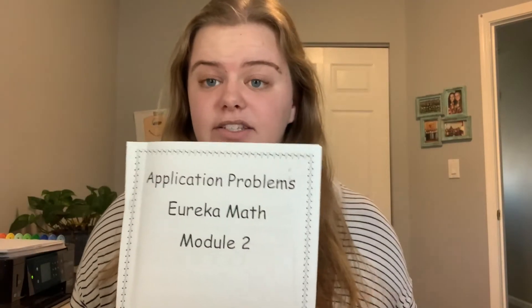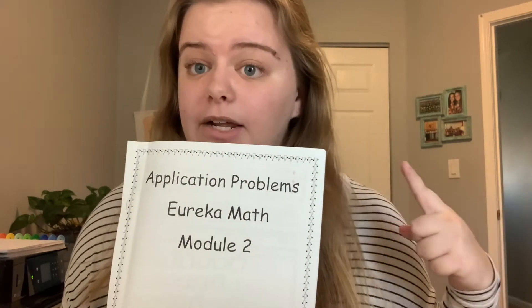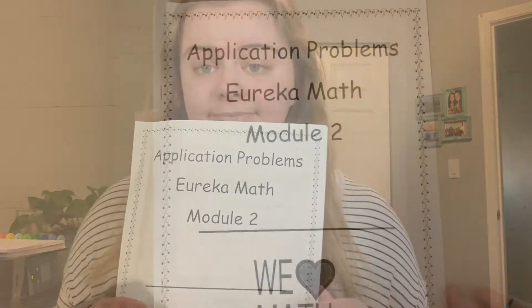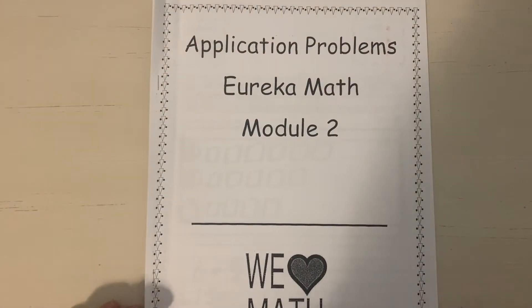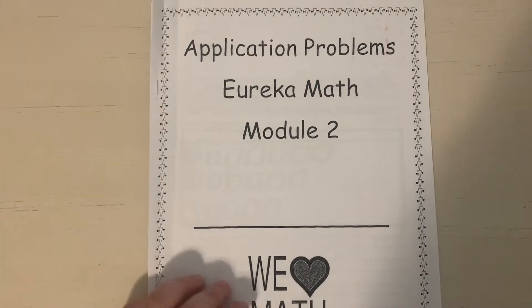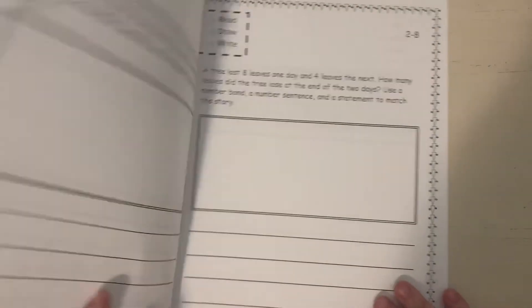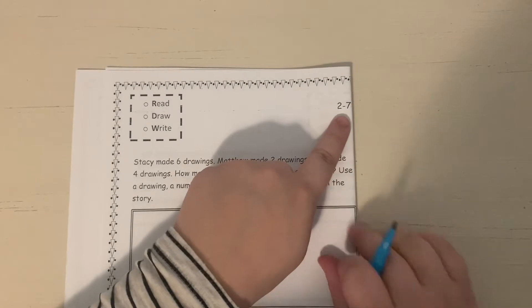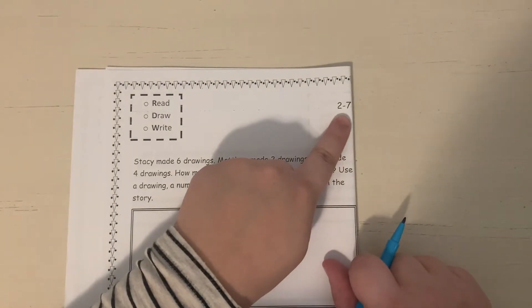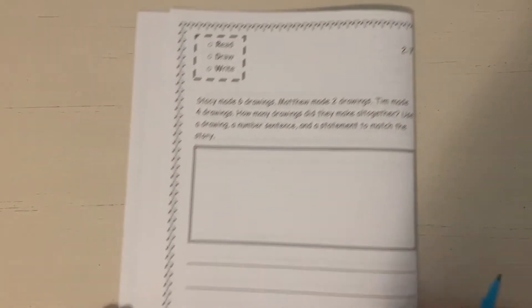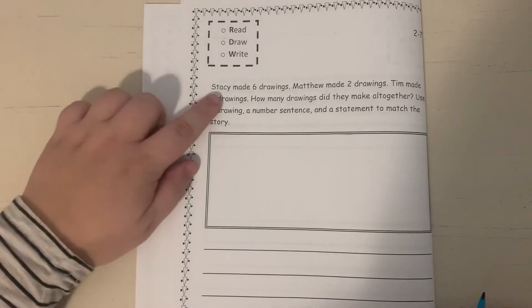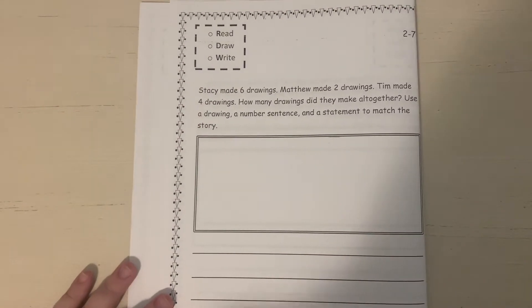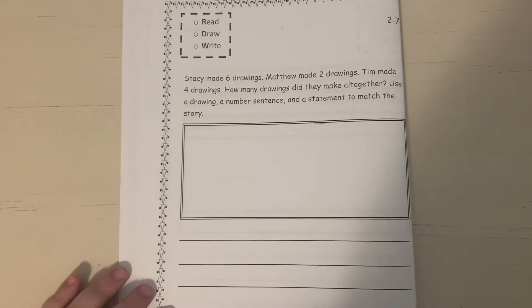And then you also need to have a pencil out. You will see me writing with a marker or a crayon, but you should be using a pencil. Alright, so for today's lesson, we want to open our math packet to the page that has a two and a seven on the top. You should see a seven and you should see that we are going to talk about Stacy today. Go ahead and pause if you need a second to find this page, but we're going to go ahead and start reading now.